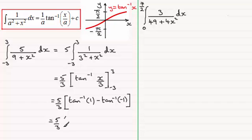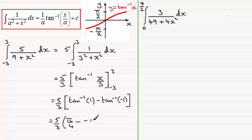So we've got 5 thirds multiplied by pi upon 4. Then minus the inverse tan of minus 1 — that's in the range minus pi upon 2 to 0, and on the calculator you get minus pi upon 4. So it's minus minus pi upon 4. Working this out in the bracket gives pi upon 2, multiply by 5 thirds, and you end up with 5 pi over 6.